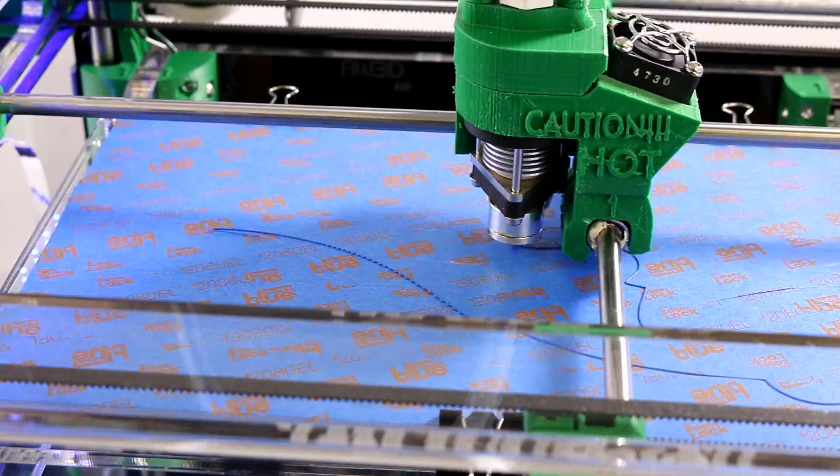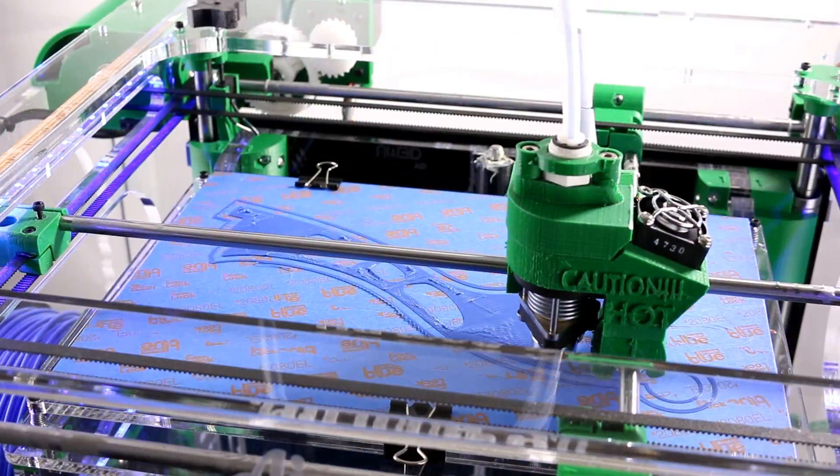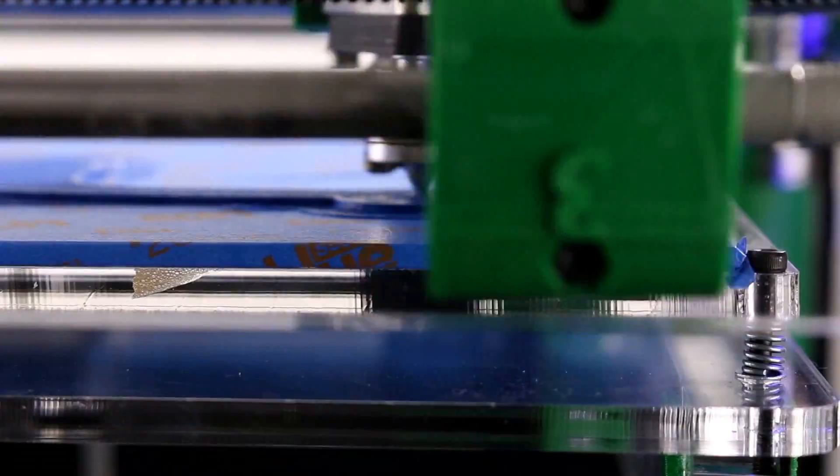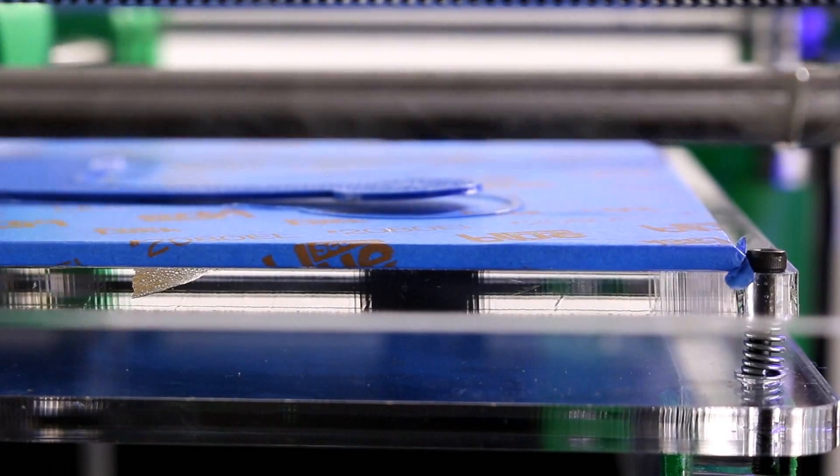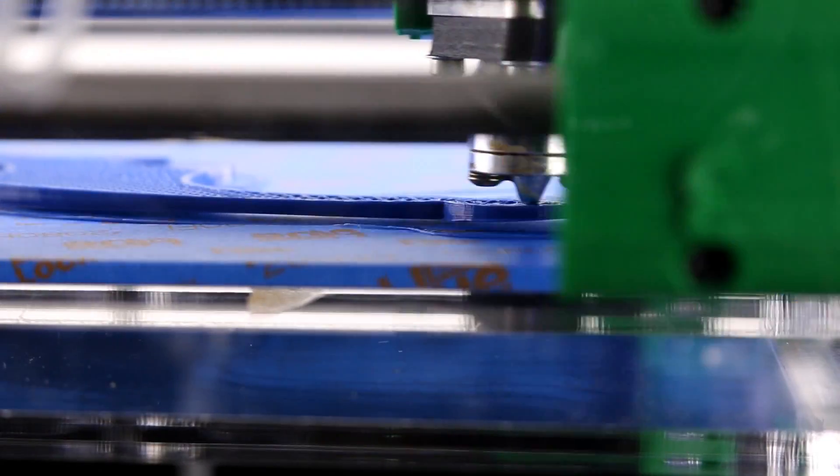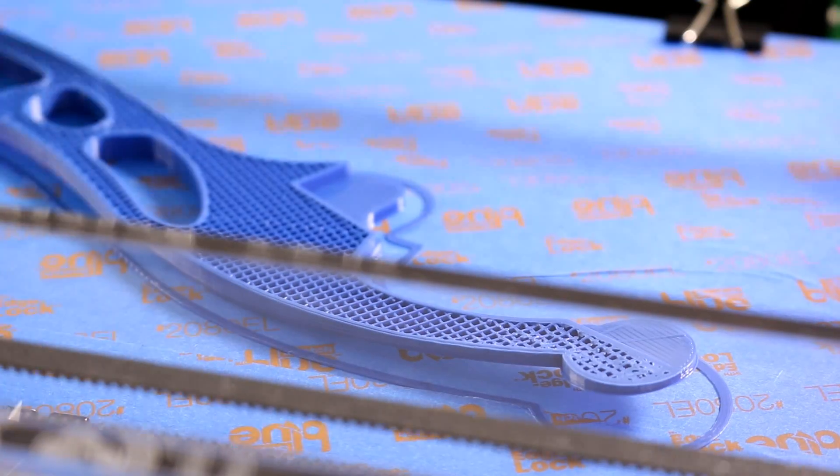During printing, things can go downhill fast, especially when printing large parts in PLA. Warped corners, uneven surfaces, and prints lifting off the build plate are common issues.